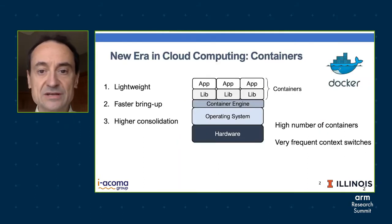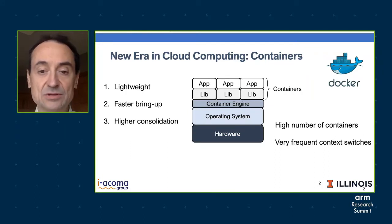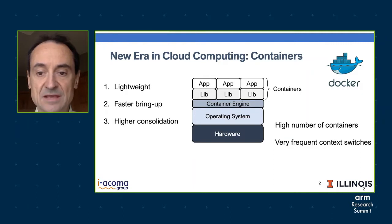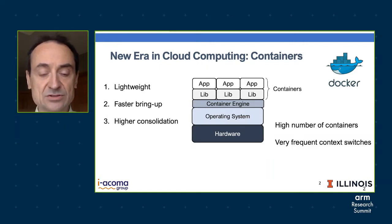We are entering a new era in cloud computing — the era of containers. Instead of having heavy duty virtual machines for each process, we now have containers. Containers are lightweight, they are fast to bring up, and they offer very high consolidation. As a result, what we are seeing in our servers and in the cloud is a very large number of containers running on the same server and very frequent context switches. This puts a lot of stress on the virtual memory translation system.